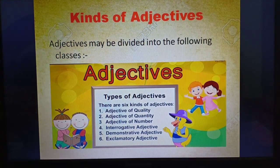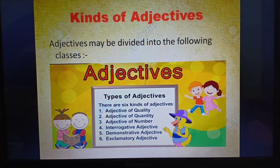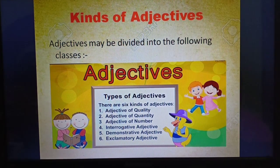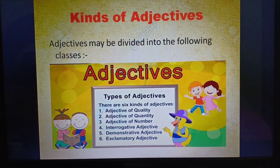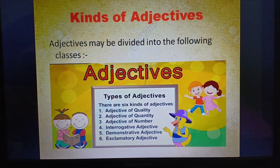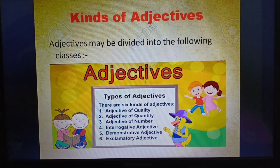Number three: adjective of number. Number four: interrogative adjective. Number five: demonstrative adjective. And number six: exclamatory adjective. Today we'll do the first three — adjective of quality, quantity, and number. These three you have for your syllabus, and the rest you don't have for your syllabus in this class.